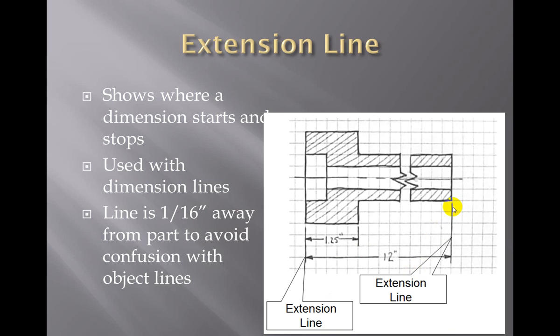These are extension lines. Extension lines follow from the part as part of the dimension lines. The actual middle part is the dimension line. The extension lines extend from the object out to show exactly what length we are talking about when we annotate the dimension. The line is one-sixteenth of an inch away from the part, kept clear to show that it is an extension line so that you're not confused that it's actually an object line as part of the object.